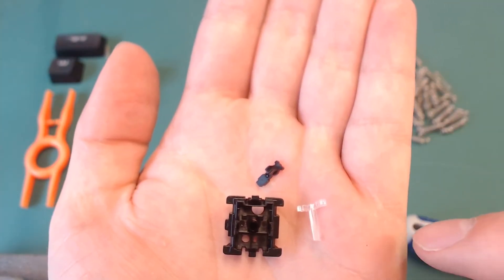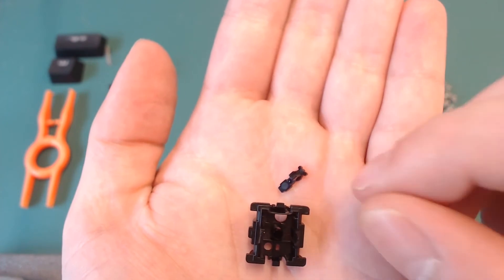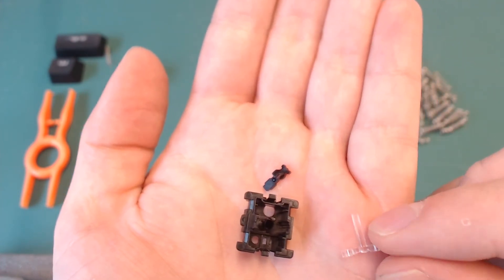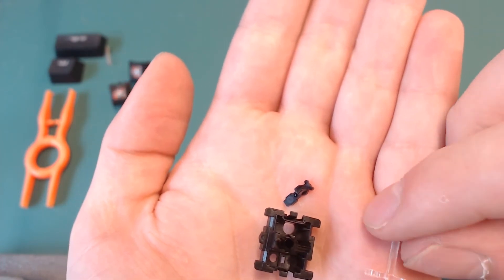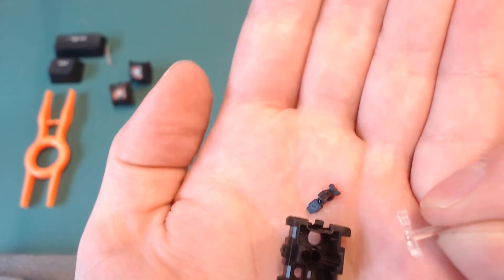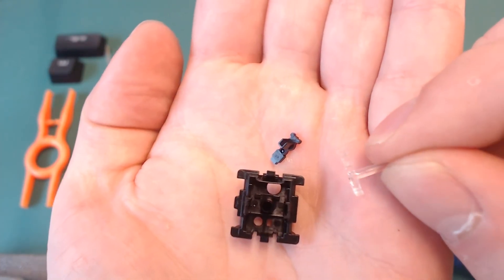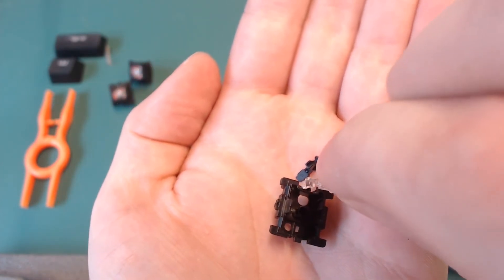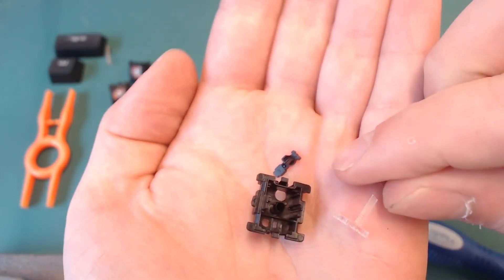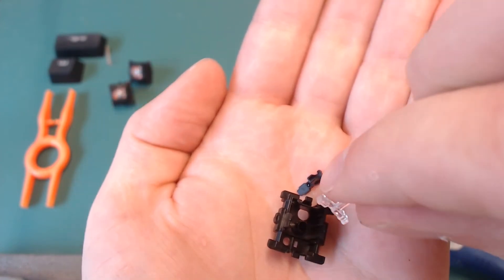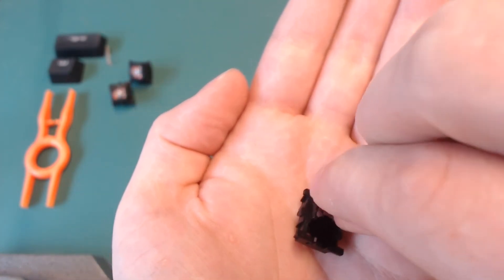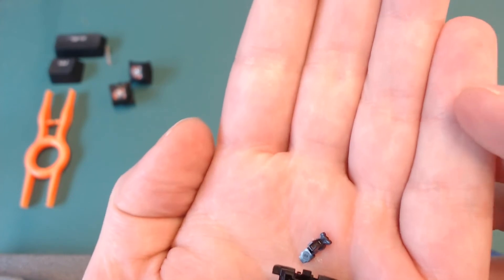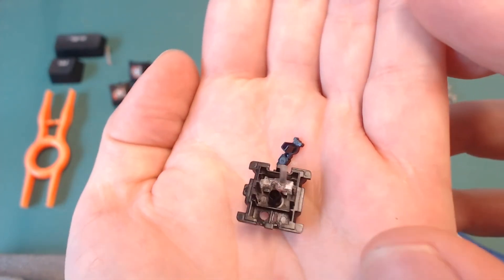The bottom part consists of two parts and this clear thing is for the RGB light to get to the top of the switch. As you can see there's a big hole inside the switch on the top. Make sure that the clear stick that sticks out is on top of the hole and it should fall in almost by itself, and then it's already in place.